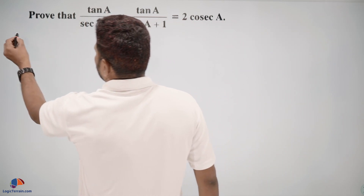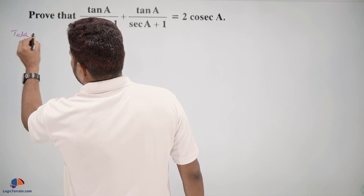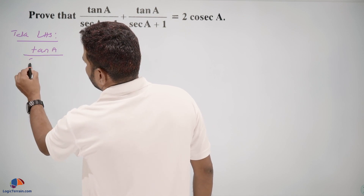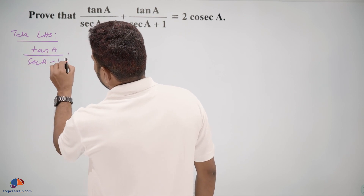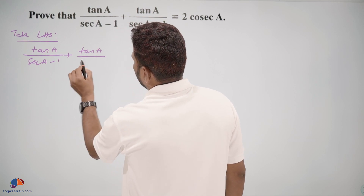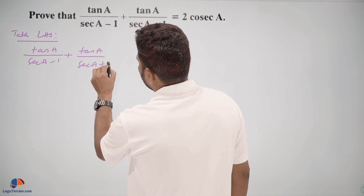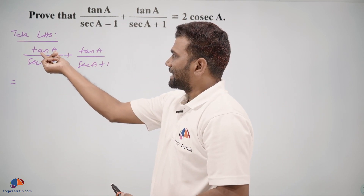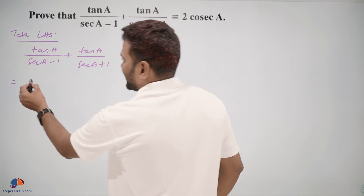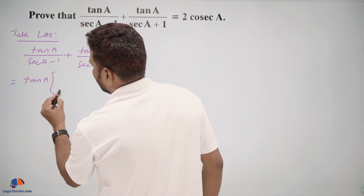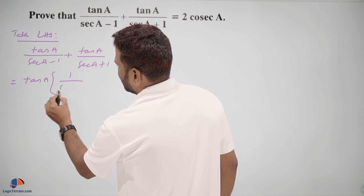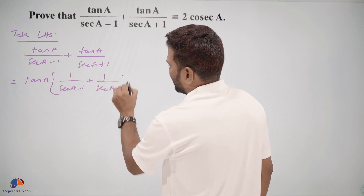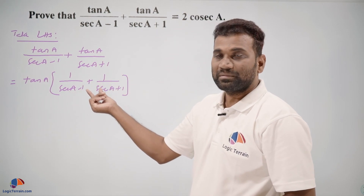Take LHS: tan A upon secant A minus 1, plus tan A upon secant A plus 1. Both terms have tan A common, so take tan A common. Then we have 1 upon secant A minus 1, plus 1 upon secant A plus 1.